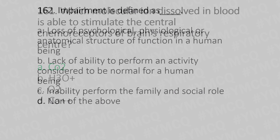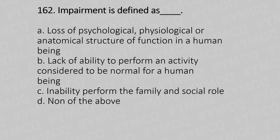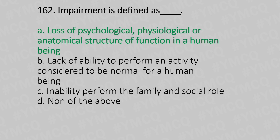Question 162: Impairment is defined as — Option A: Loss of psychological, physiological, or anatomical structure or function in a human being. Option B: Lack of ability to perform an activity considered to be normal for a human being. Option C: Inability to perform the family and social role. Option D: None of the above. And the answer is Option A.